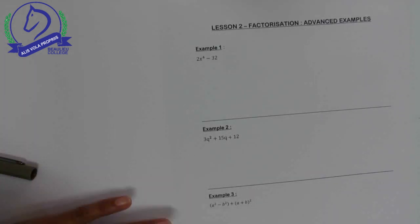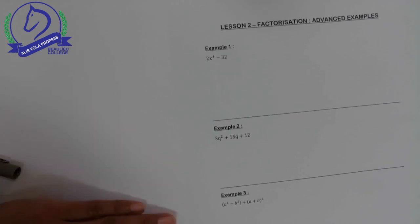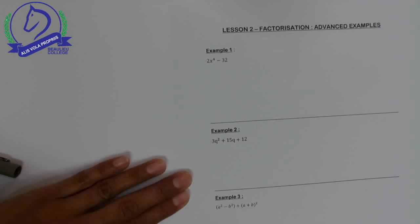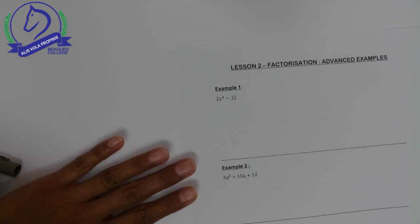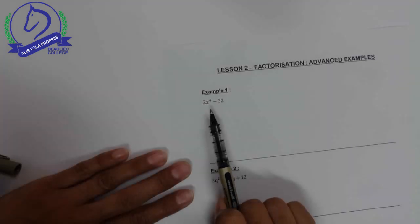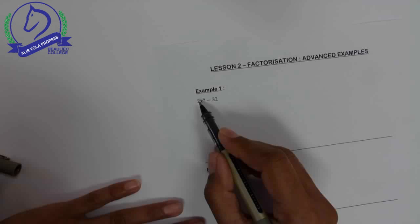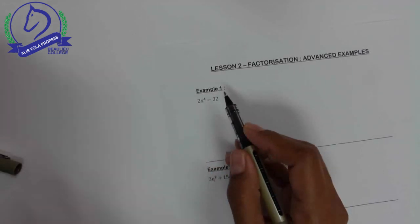Let's look at these. I'm going to work through three examples with you, after which you will have an exercise to do. Example one: 2x to the power 4 minus 32. Now remember, the question reads factorize. Before doing anything, the golden rule is always identify if there is a common factor.